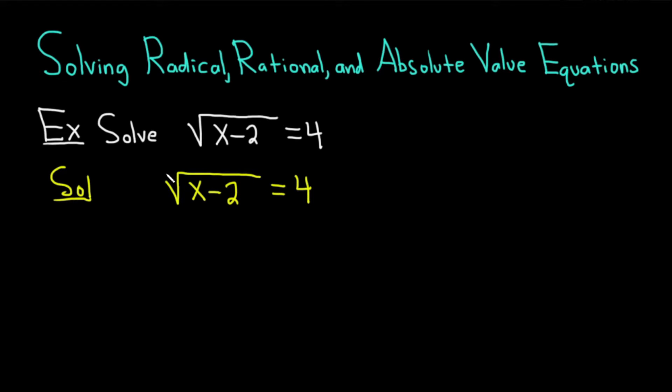So to get rid of the square root, what you can do is you can square both sides. Put a parenthesis here and a 2, and then you do the same thing to the other side. When you square a square root, it goes away. So we just get x minus 2, and then 4 squared is equal to 16. To finish, we just add 2 to both sides, so plus 2, plus 2. And so we get x equals 18.